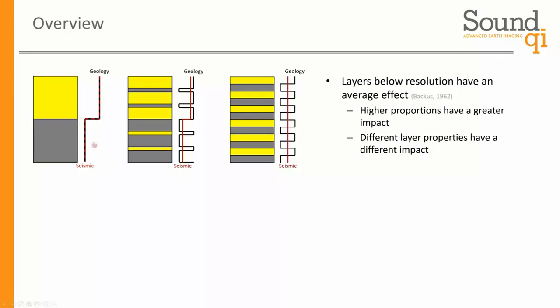When we have two very well resolved layers, the actual elastic properties in black are the same as what we'd observe from seismic in red. As we start to introduce thin layers with different impedances, we aren't able to resolve those on the seismic, even though they are there. The effect that those have is a bulk shift of those properties — an average effect measured by the seismic wave. The higher proportion of those layers, the higher the impact on that shift. So the first thing we're going to look at is: given the magnitude of that shift, can we determine what the proportion of those inserted layers is?